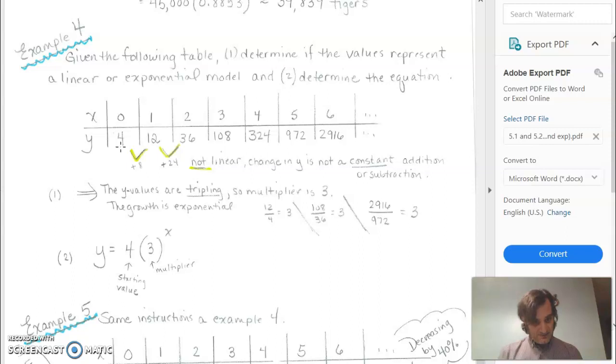Well, right here, we went from 4 to 12, which increased by 8, but then we went from 12 to 36, which is an increase of 24. So it is not linear because we didn't add 8 every time. We didn't add the same number.